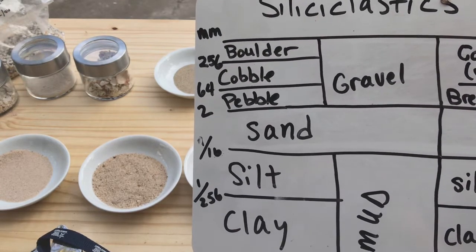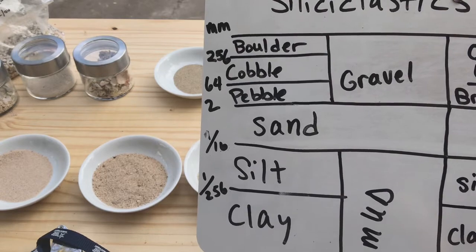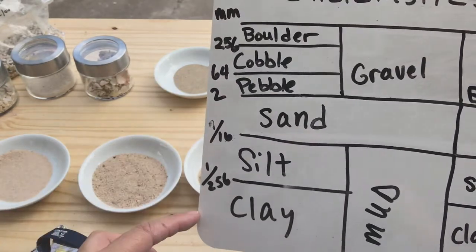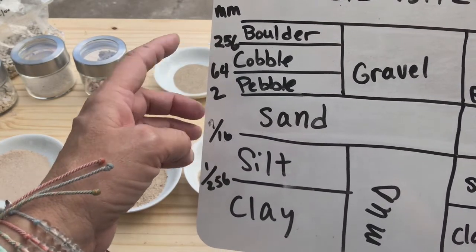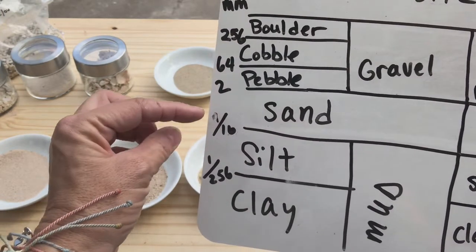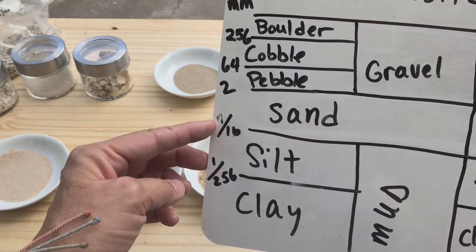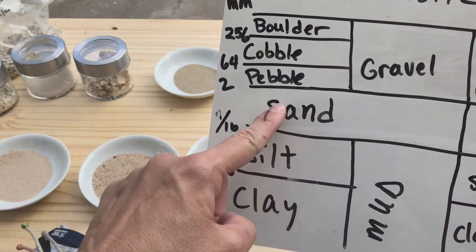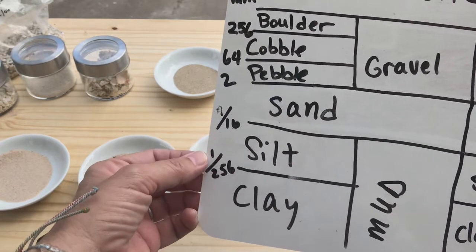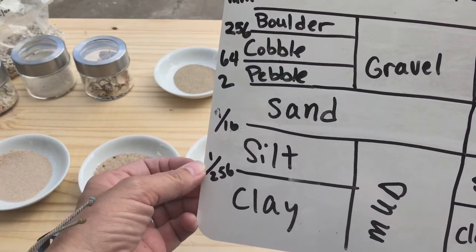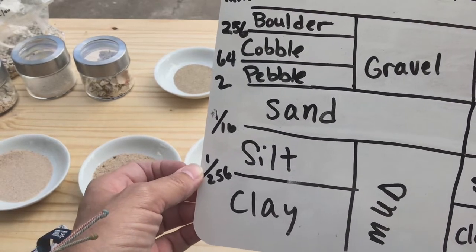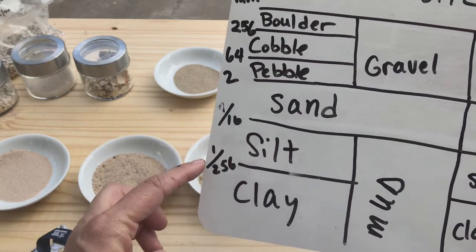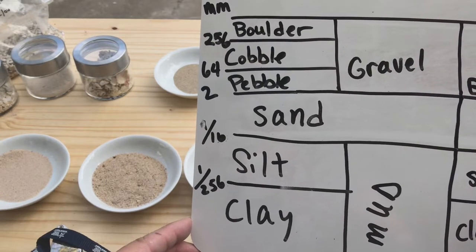This table shows the different grain size names for sediment, all in millimeters. Anything between 1/16 of a millimeter — about the thickness of a human hair — and 2 millimeters — about the thickness of a nickel — is sand size. Between 1/16 and 1/256 of a millimeter is silt size. Anything smaller than 1/256 of a millimeter is clay sized.